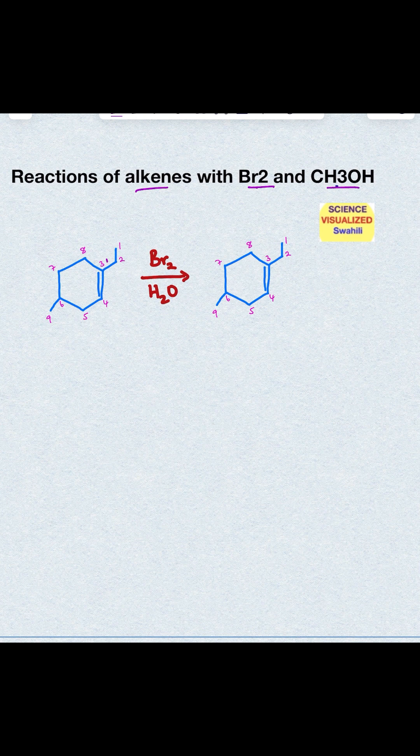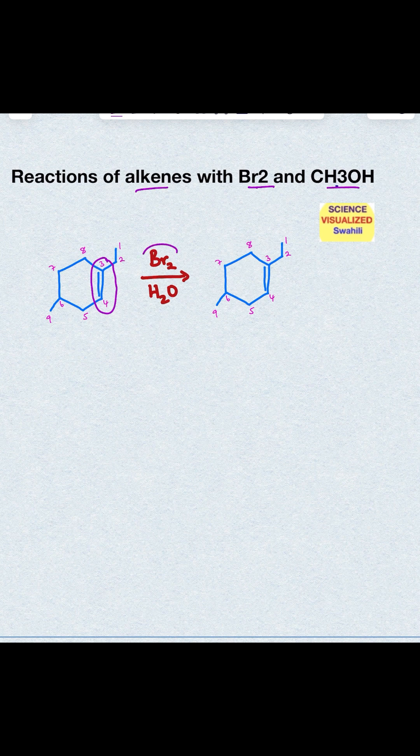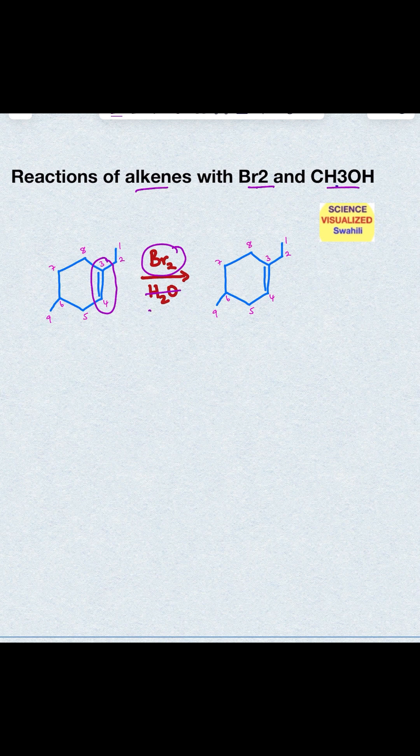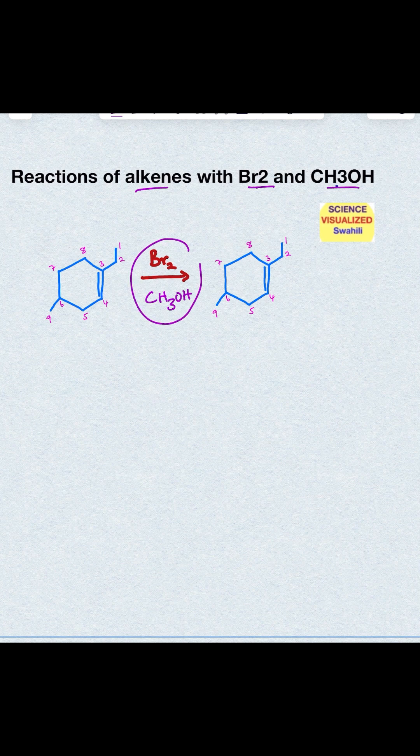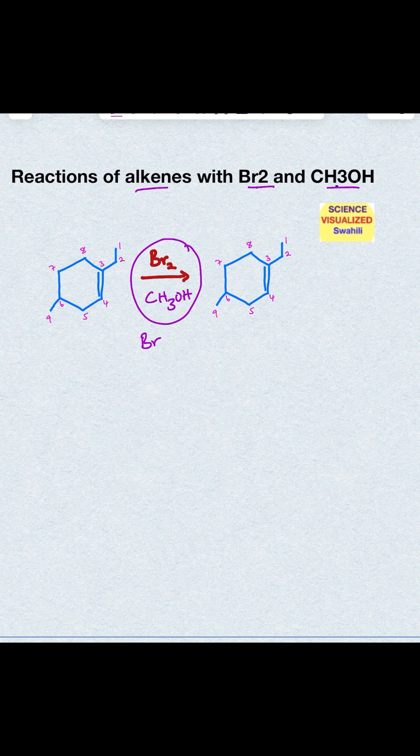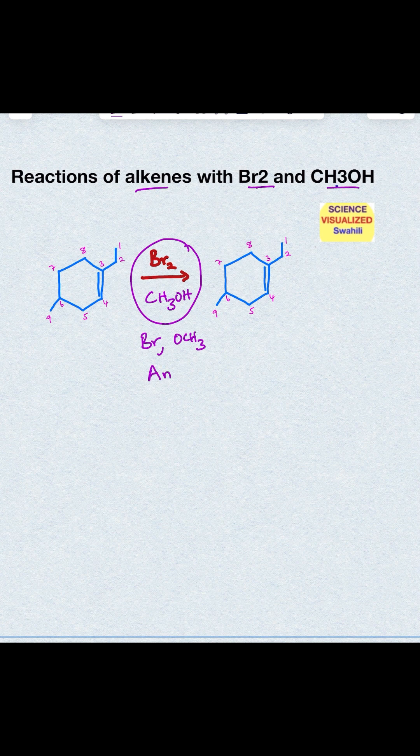So here we have an alkene, look at a double bond between carbon number 3 and number 4, and that's reacting with bromine and methanol, CH3OH. The net result of this reaction is that you end up adding Br and OCH3 across the double bond, and that addition is anti.